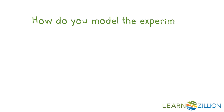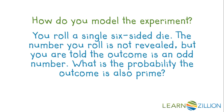How would you model this probability experiment? You roll a single six-sided die. The number you roll is not revealed, but you were told the outcome is an odd number. What is the probability the outcome is also prime?